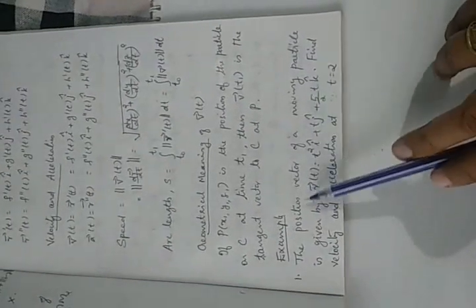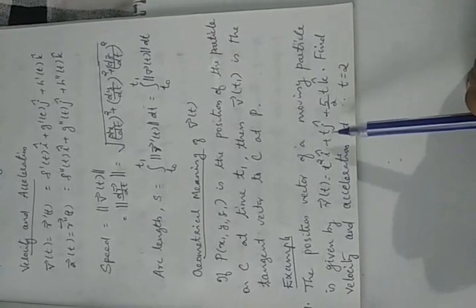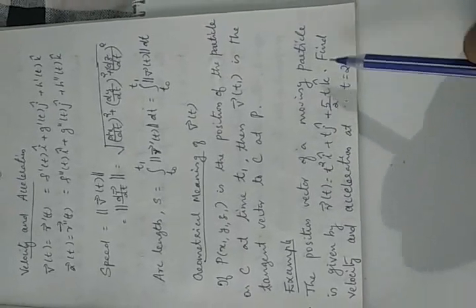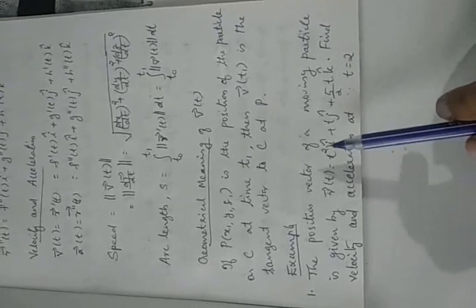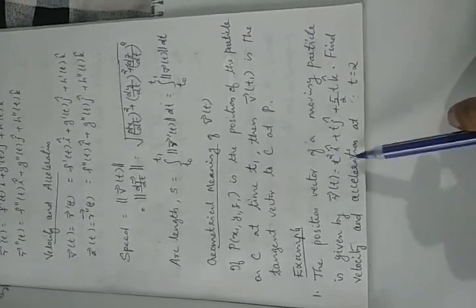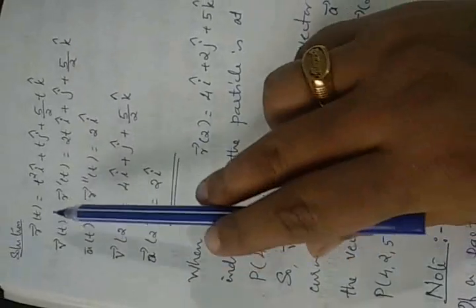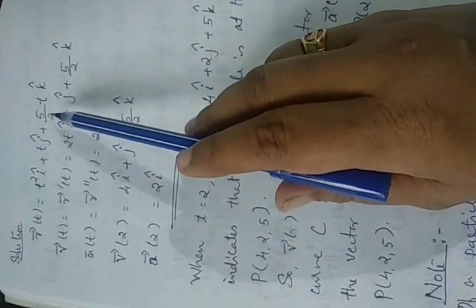Let us consider an example to find velocity and acceleration of a moving particle. The position vector is given by R(t) = t²i + tj + (5/2)tk. We need to find the velocity vector at t = 2.